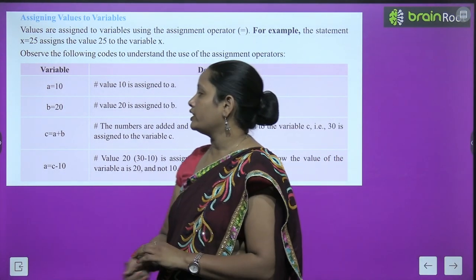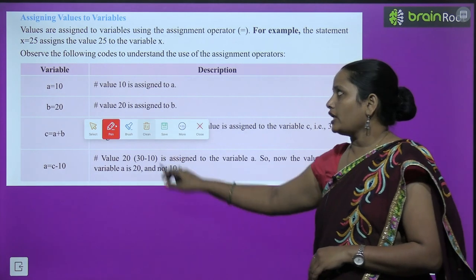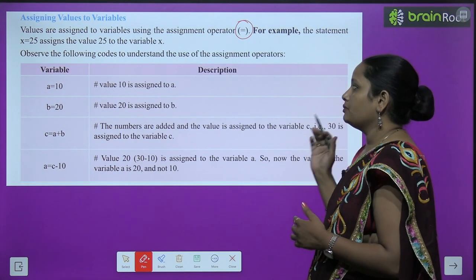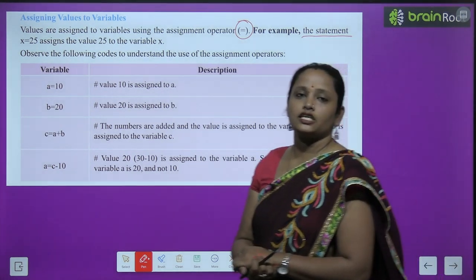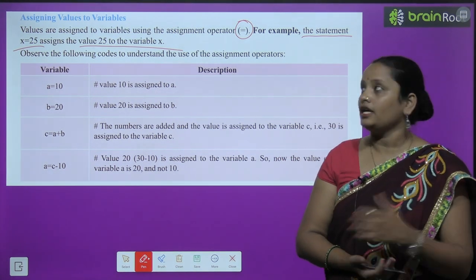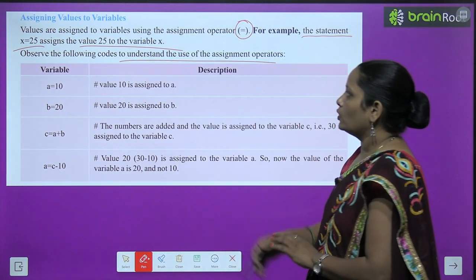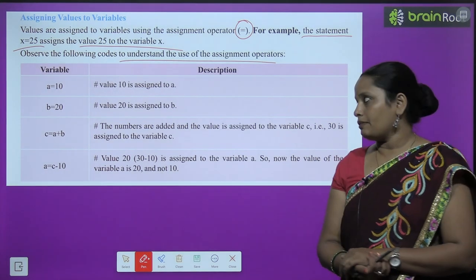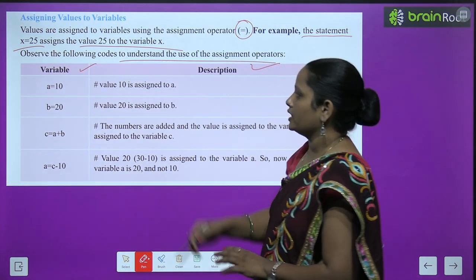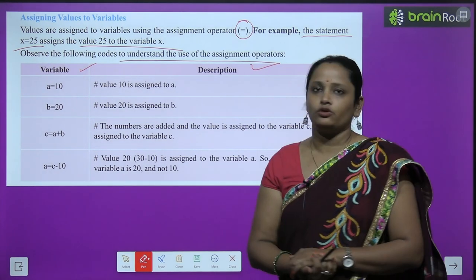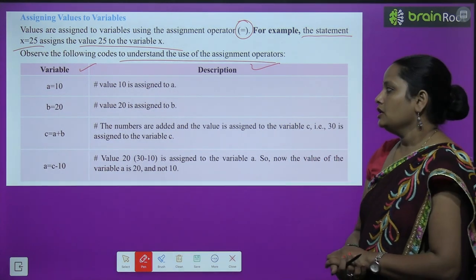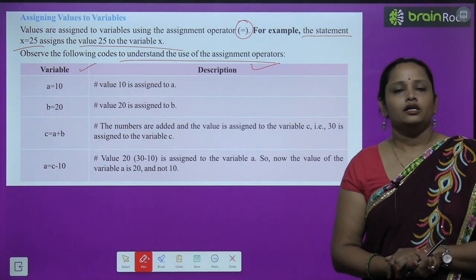Next is assigning values to variables. Values are assigned to variables using the assignment operator (=). For example, the statement x = 25 assigns the value 25 to variable x. Consider: a = 10, b = 20, c = a + b, so c = 30. If then a = c - 10, then a = 30 - 10 = 20.